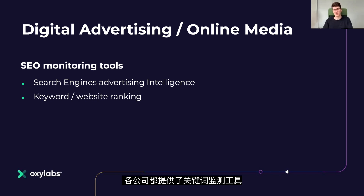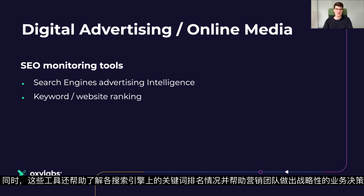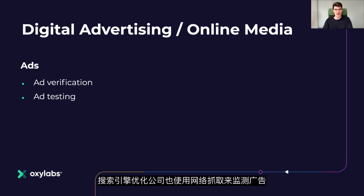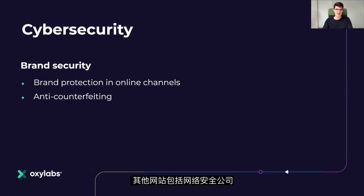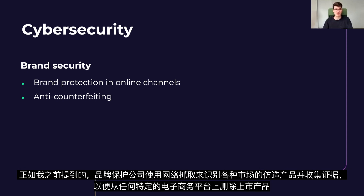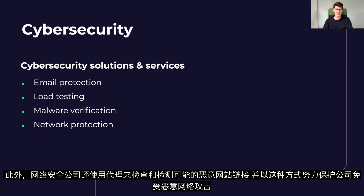Various companies provide tools for keyword monitoring, which provide insights into keyword ranking on various search engines and help marketing teams make strategic business decisions. SEO companies also use web scraping to monitor ads — companies or ad network owners check under what conditions their ads are being displayed throughout the web from various locations. Other users include cyber security companies: brand protection companies use web scraping for identifying counterfeit products in various marketplaces, and cyber security companies use proxies to check and detect possibly malicious website links to protect companies from malicious cyber attacks.